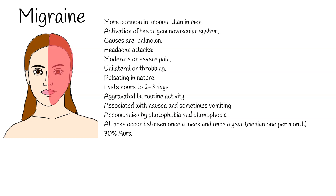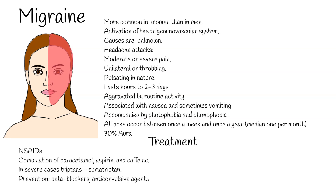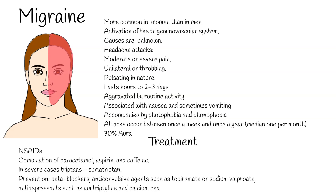For treatment, mild to moderate symptoms are managed with simple analgesics such as NSAIDs, or the combination of paracetamol (acetaminophen), aspirin, and caffeine. In severe cases, triptans such as sumatriptan are recommended. Many medications are used off-label for preventive treatment, including beta-blockers, anticonvulsive agents such as topiramate or sodium valproate, antidepressants such as amitriptyline, and calcium channel blockers such as flunarizine.